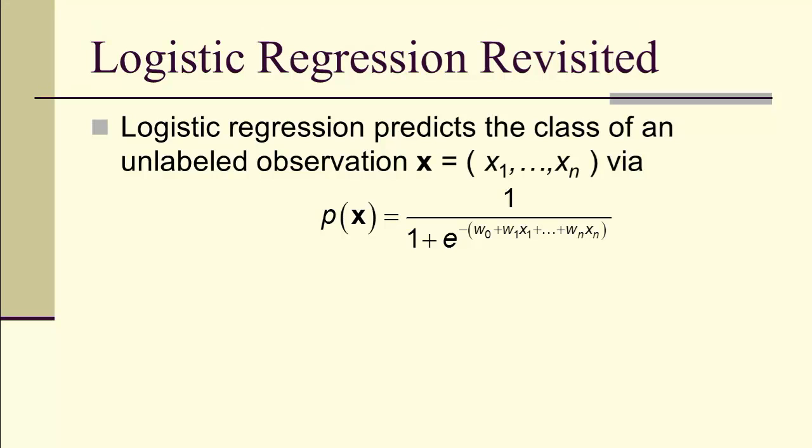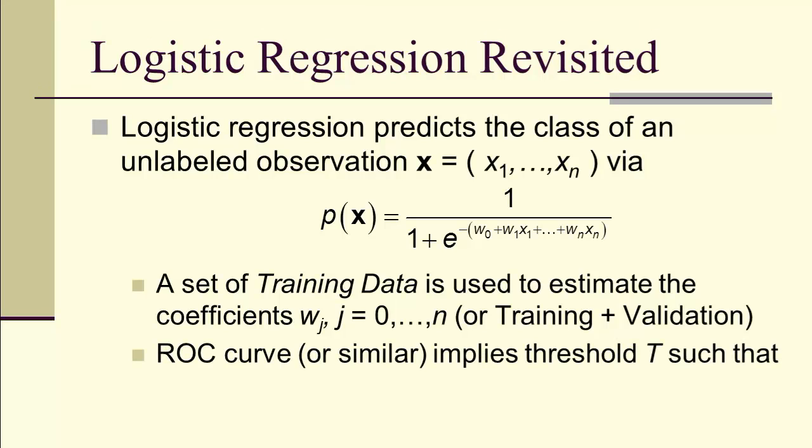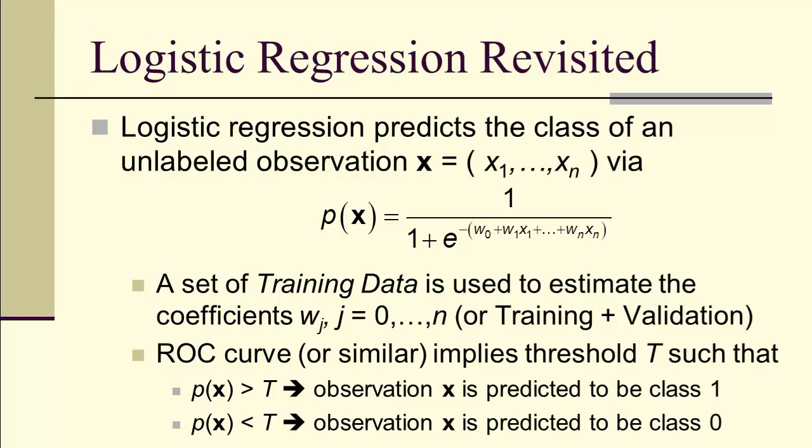Logistic regression predicts the class of an unlabeled observation using a probability function. We use training data to estimate the coefficients W_j. An ROC curve or similar determines what threshold we use: above the threshold predicted to be class 1 and below class 0.